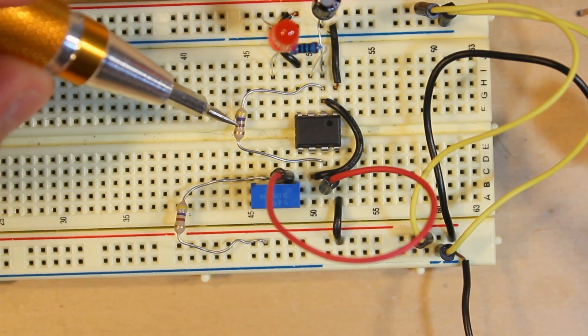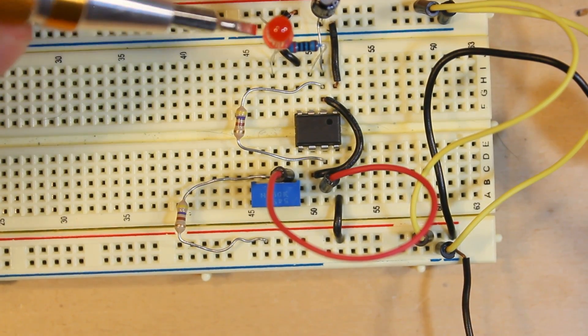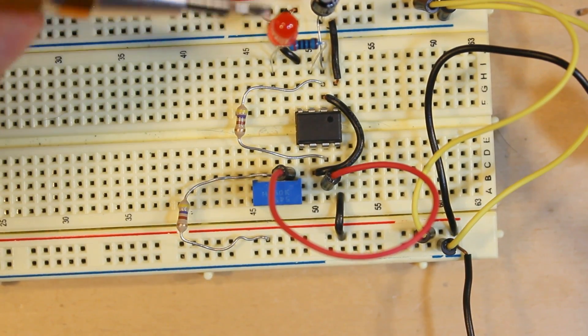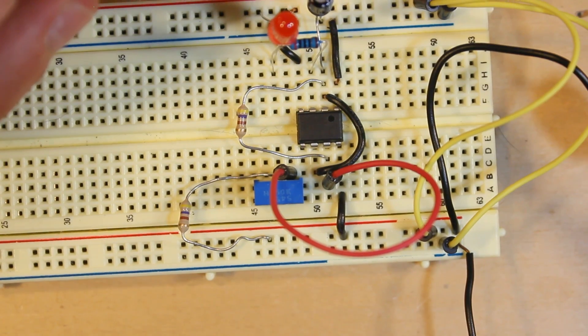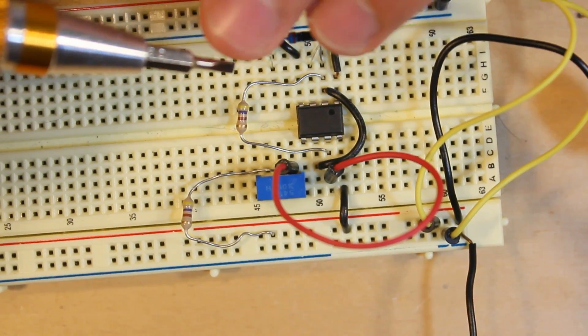This resistor controls the length of time that the LED is actually on. Since this is a relatively small value of 470 ohms, the LED only turns on for a little bit. If we increase the resistance, then this capacitor would take longer to discharge and the LED would be on for a longer amount of time.